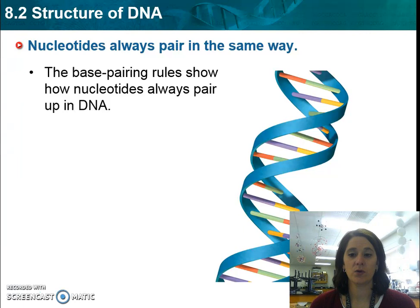Everyone's DNA is unique to themselves, so the way in which the ladder is arranged is unique to that person. But an A will always pair to a T, and a C will always pair to a G. That is known as base pairing rules.